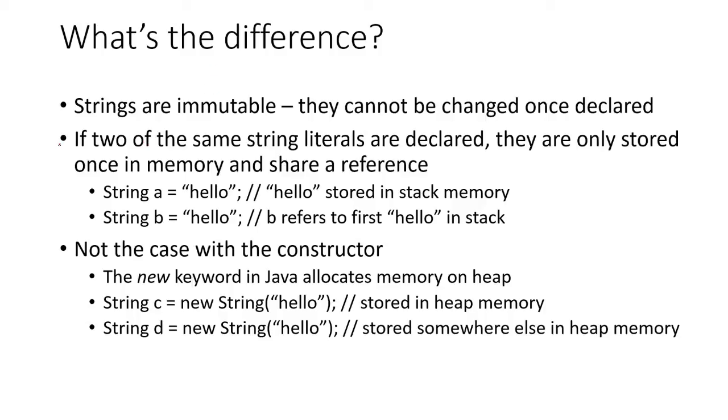Another way that strings can differ a bit from other objects is that if two of the same string literals are declared, they're only stored in memory once and share a reference. So here we have string A is equal to 'hello.' Hello is stored in stack memory. So imagine this is our stack here, and we have hello. And this is at a certain memory address, whatever it is, not important.